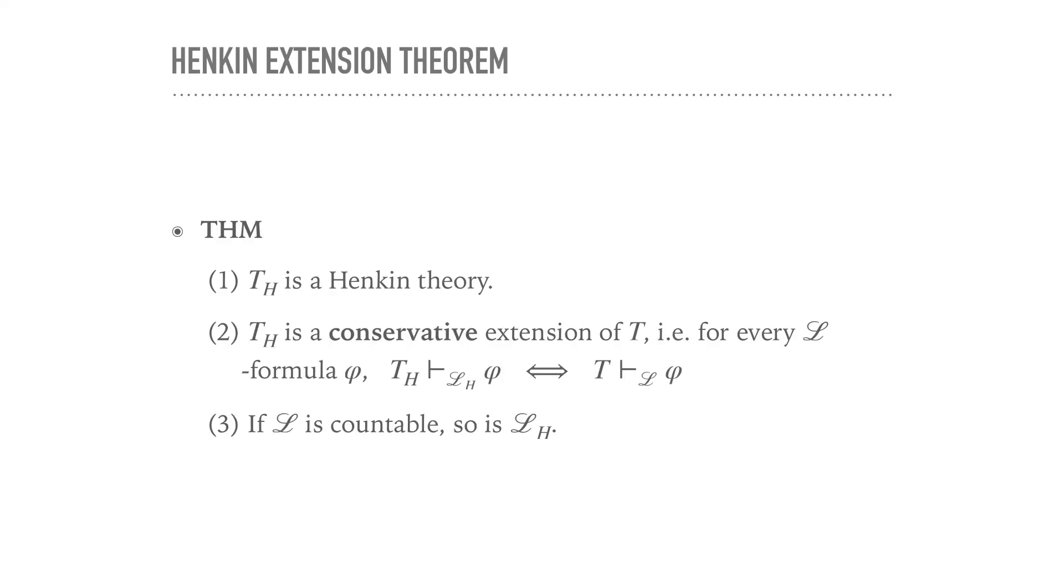So now, after iterating this whole process, we obtain this theory T_h. And for this, it's not hard to show that this is actually a Henkin theory. You should, of course, verify this yourself. Take a few moments. But if you look at the definition and the process, how T_h was defined, you will see that it's pretty straightforward to show that it's a Henkin theory.